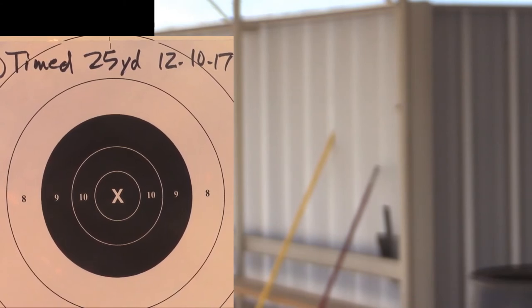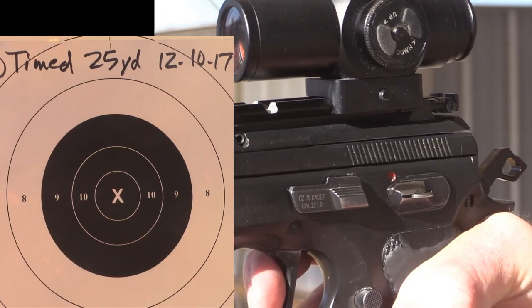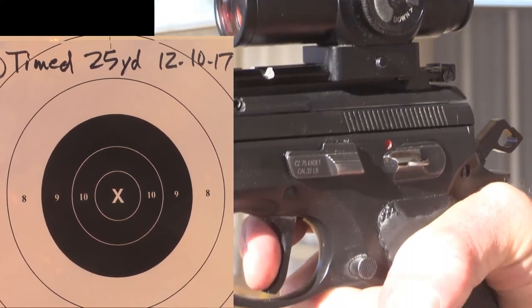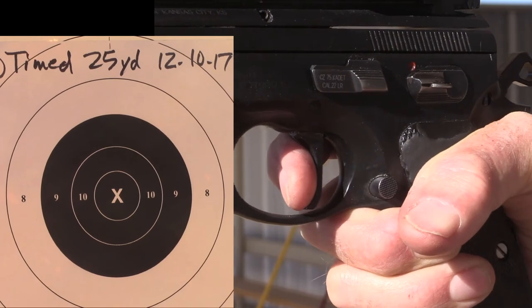This is timed fire. I'm going to start it over. This is a string of timed fire. Target two. Five shots in twenty seconds. This is five shots in twenty seconds. With five rounds, load. Close. Is the line ready? Line is ready. The line is ready. Ready on the right. Take the gun off the block. Ready on the left. Raise the gun to the burn. Ready on the firing line. Move the gun up into position.